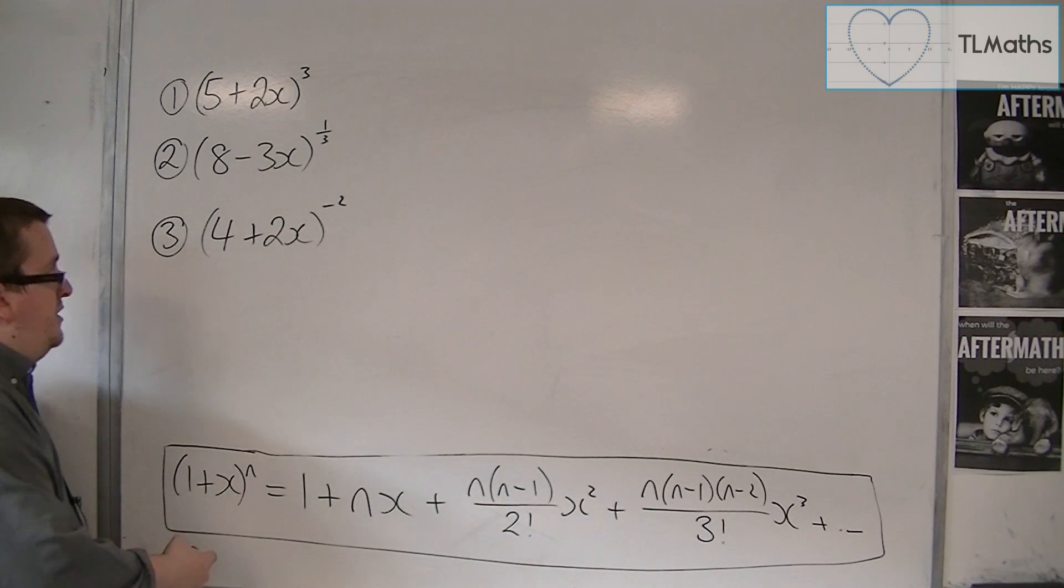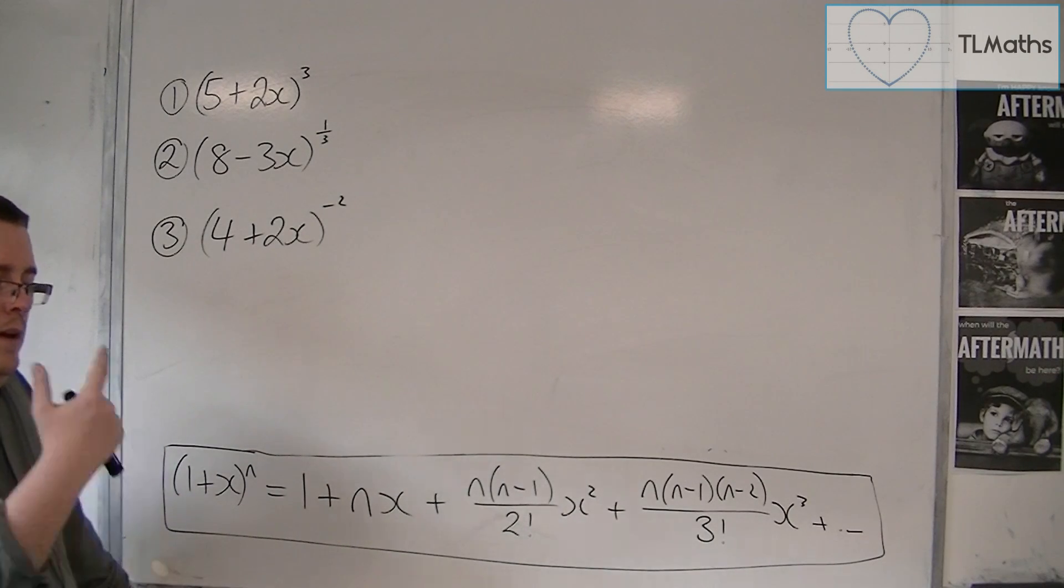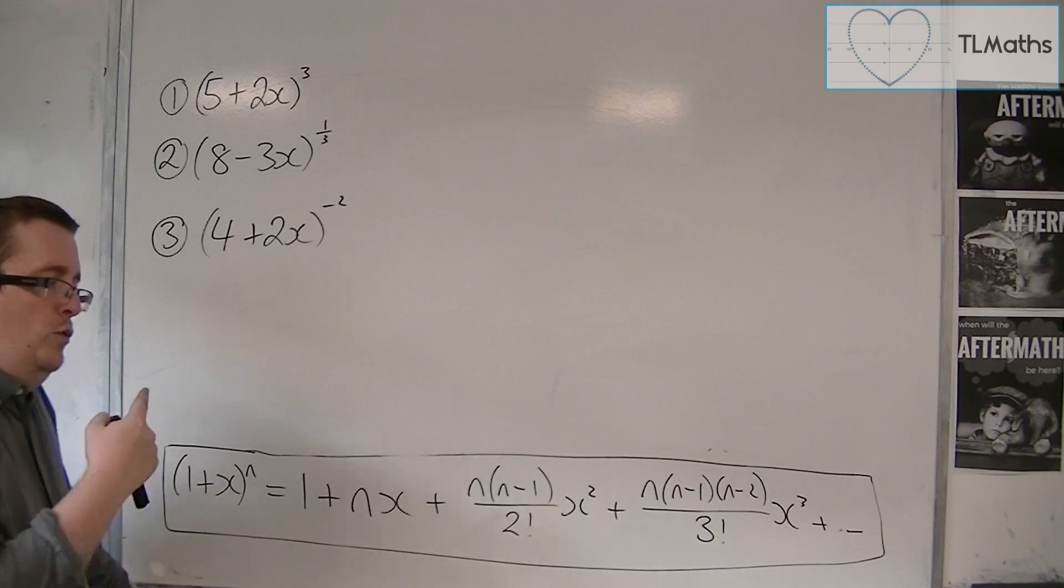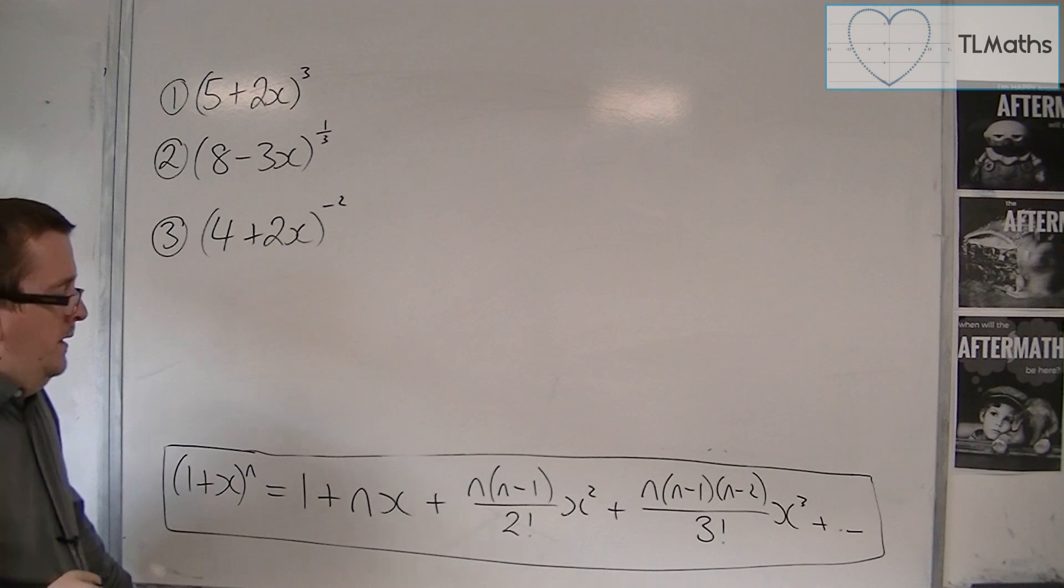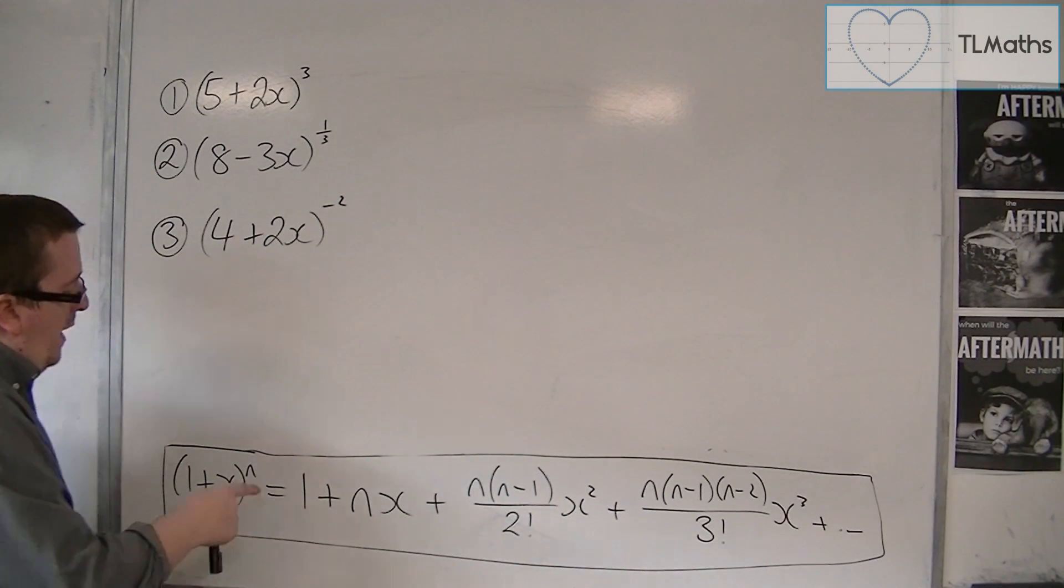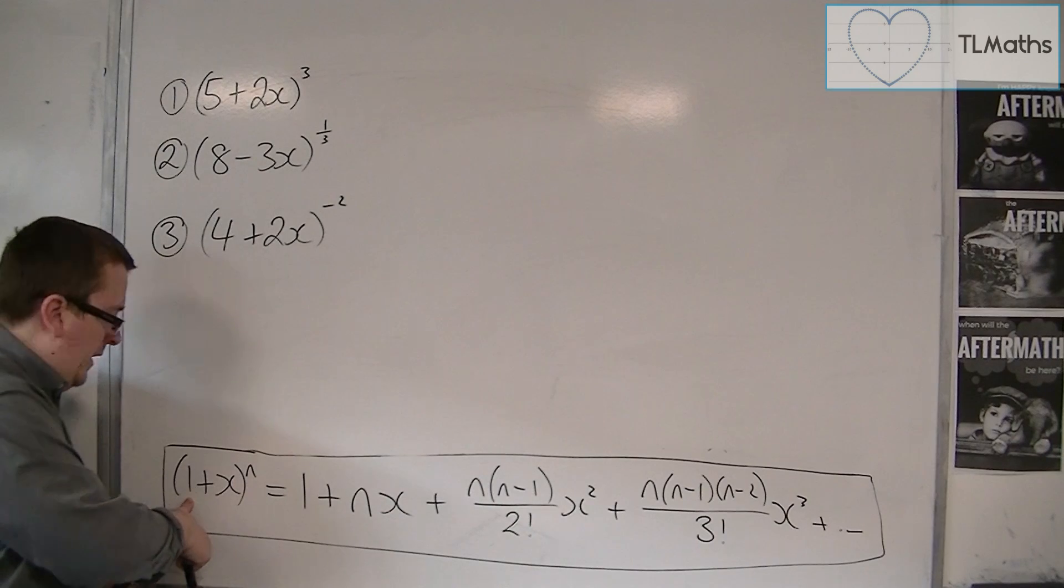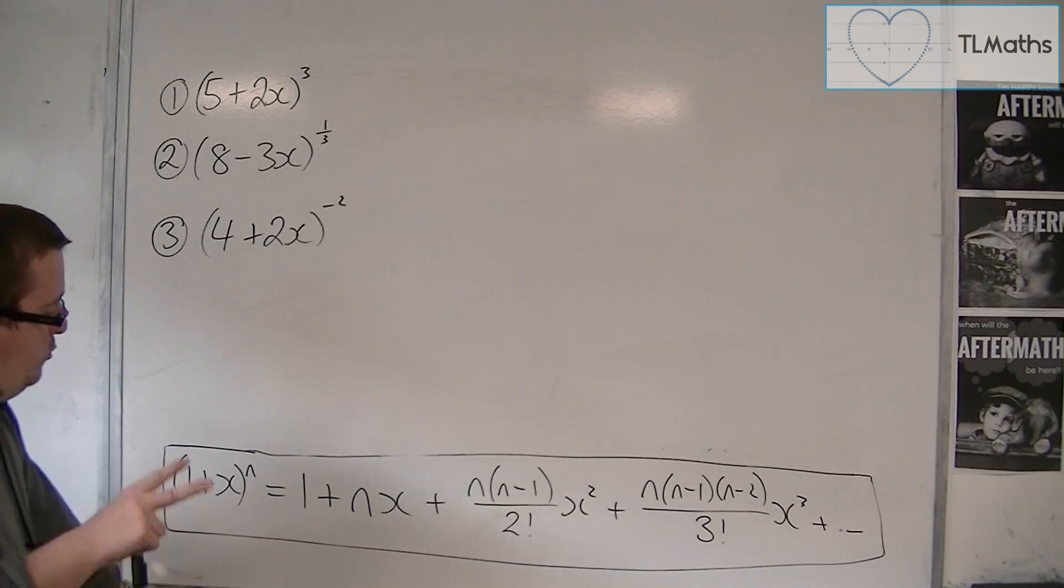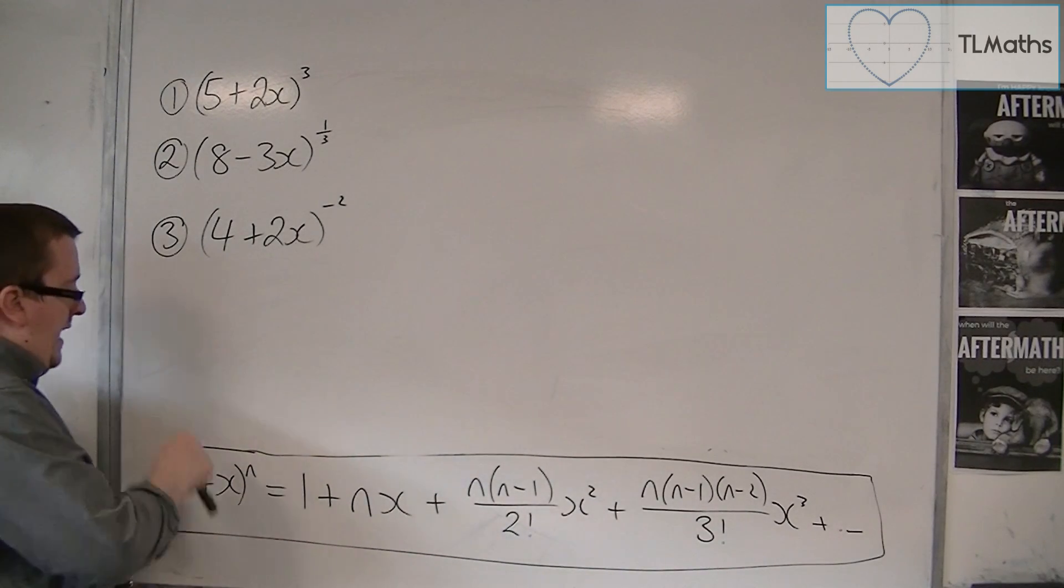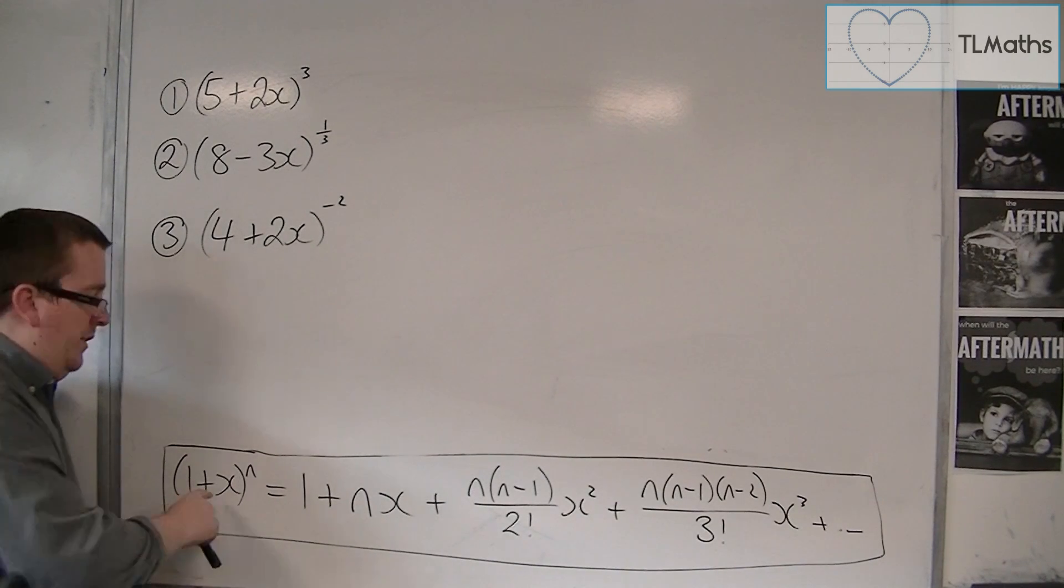However, if we'd started off with 2 plus x to the n, then when I'm substituting in 0, the formula would have to change. So, this only works when I can substitute 0 into that and get 1 to the power of something. This only works if this is 1, if you have 1 plus something.